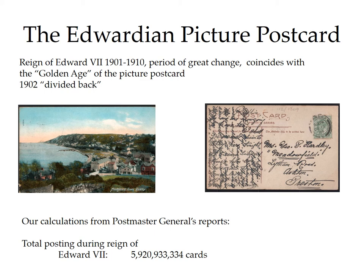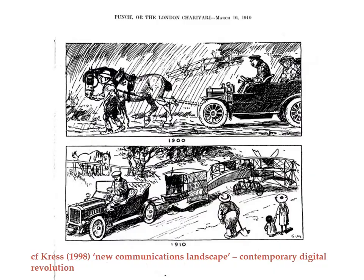The reign of Edward VII, 1901 to 1910, a period of great change, coincided with the golden age of the picture postcard. Using the Postmaster General's reports, we calculated that the total posting of cards during his reign was just about six billion cards — about 200 per person. And if you think of all the people that couldn't write cards — the very young, the very old, the underclass — then it really is evidence of the picture postcard as a tremendously popular phenomenon.